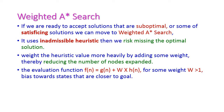A* search always produces an optimal solution. But if we are okay with a suboptimal solution, we can move to weighted A* search. Weighted A* search will give only a satisfying solution because it uses an inadmissible heuristic — that is, we add some additional weight to the heuristic value.